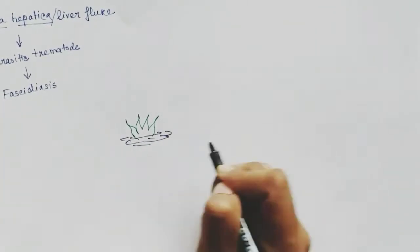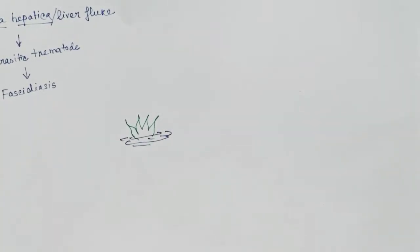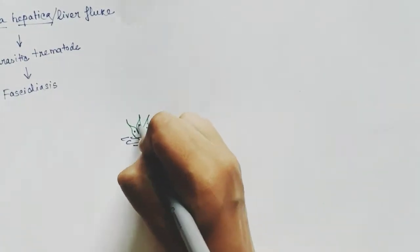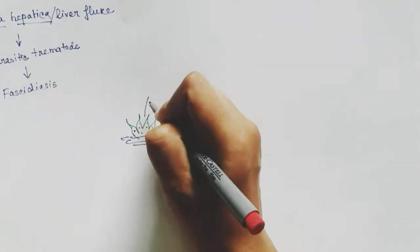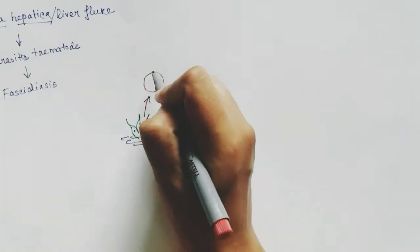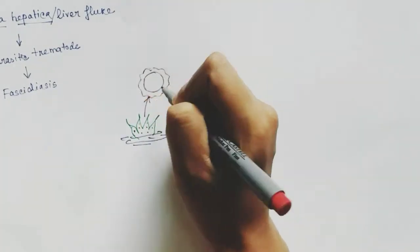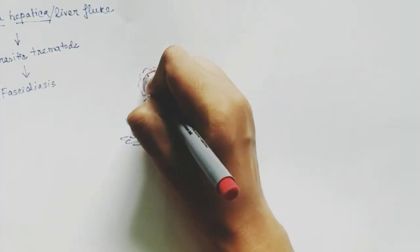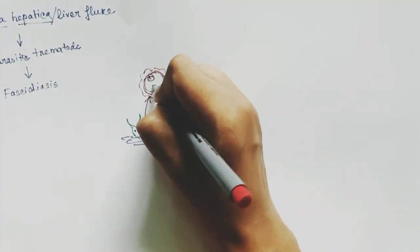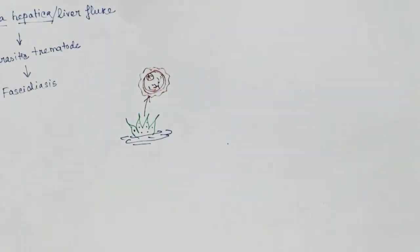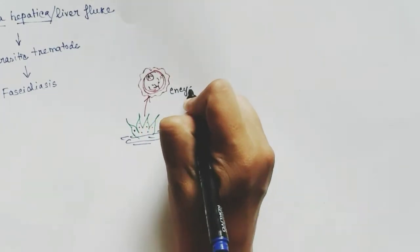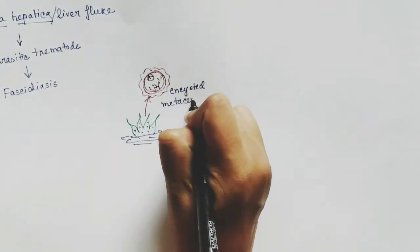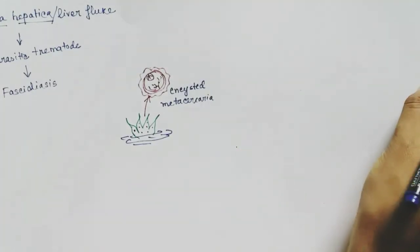The Fasciola hepatica cyst usually remains present in water plants. In this cyst form it looks something like this under the microscope. This cyst form contains the encysted metacercaria stage of Fasciola hepatica.